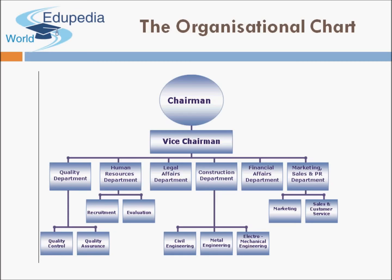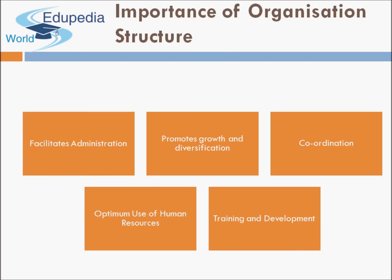The organization structure clearly demarcates the hierarchy, the reporting structure, and the communication channel of the organization. In primitive organizations, there was no proper structure, resulting in confusion, ambiguity, and duplication of work. Today's organizations use organization charts to bring clarity of roles, clarity of responsibility, and smooth functioning. Importantly, the organization structure facilitates administration, promotes growth and diversification, eases coordination, and enables optimum use of human resources and training.